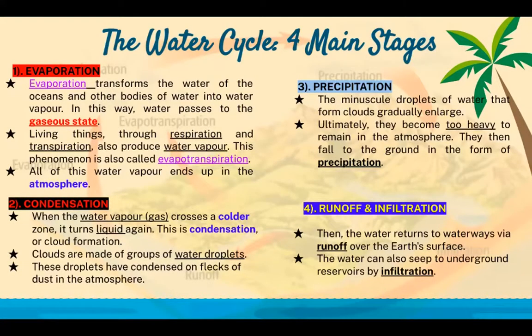These are the four main stages of the water cycle. One: evaporation — this transforms the water of the oceans and other bodies of water into water vapor, so water passes to the gaseous state. Living things, through respiration and transpiration, also produce water vapor. This phenomenon is also called evapotranspiration — living organisms putting moisture back into the atmosphere. All of this water vapor ends up in the atmosphere.